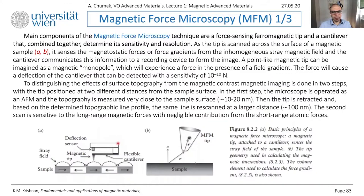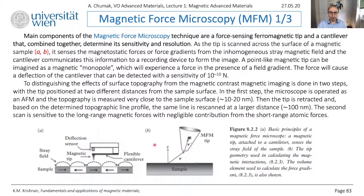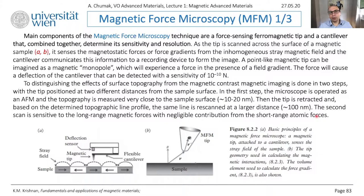There are many commercially available tips with magnetic nanoparticles. When you scan along, for example, a domain pattern with stray field, this stray field exerts a force on your tip and you can easily measure magnetic patterns. You need to scan with your tip very close to the surface — 10 to 20 nanometers. The problem is that MFM combines both signals from atomic force microscope and magnetic response. If you want to separate them, what people usually do is make two scans: one close to the surface, which has strong contributions from both magnetic and atomic forces.